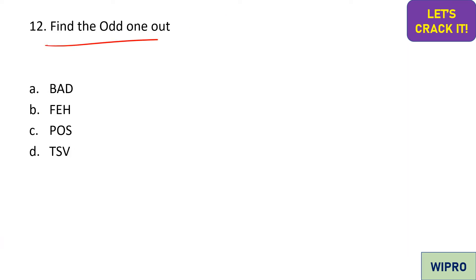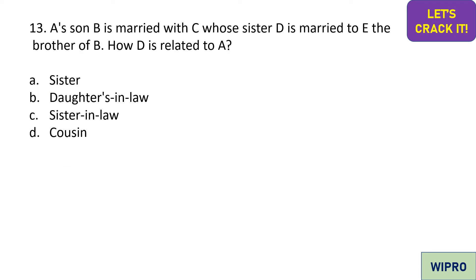Here comes another odd-one-out pattern. The logic: A, B, C is missed — write D; EFG is omitted — write H; O, P, Q is omitted — write R; S, T, U is omitted — write V. Follow the pattern carefully to identify which option breaks the rule.